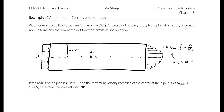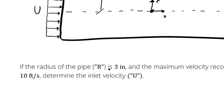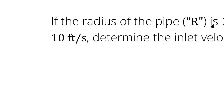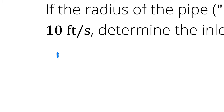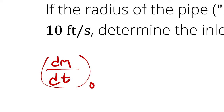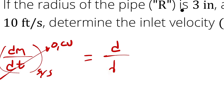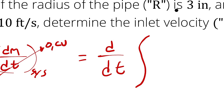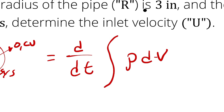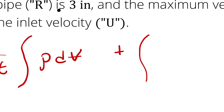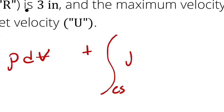This is a conservation of mass problem, so we start with the Reynolds Transport Theorem simplified for conservation of mass. The rate of change of mass of the system, dm/dt, which is zero because we're analyzing a control volume, equals d/dt of the integral of density dV, plus the integral across the control surface of density times velocity vector dot area vector.